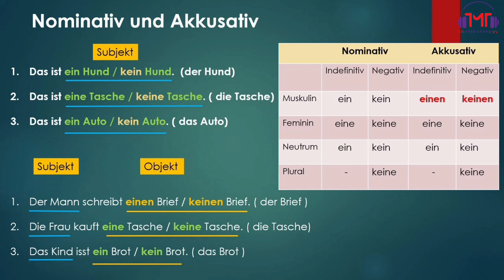I'll talk about this in the next article. In the last article you can use what we're talking about. The nominative is in the 2nd of the article. There are a number of readers that you can use — at least 5.